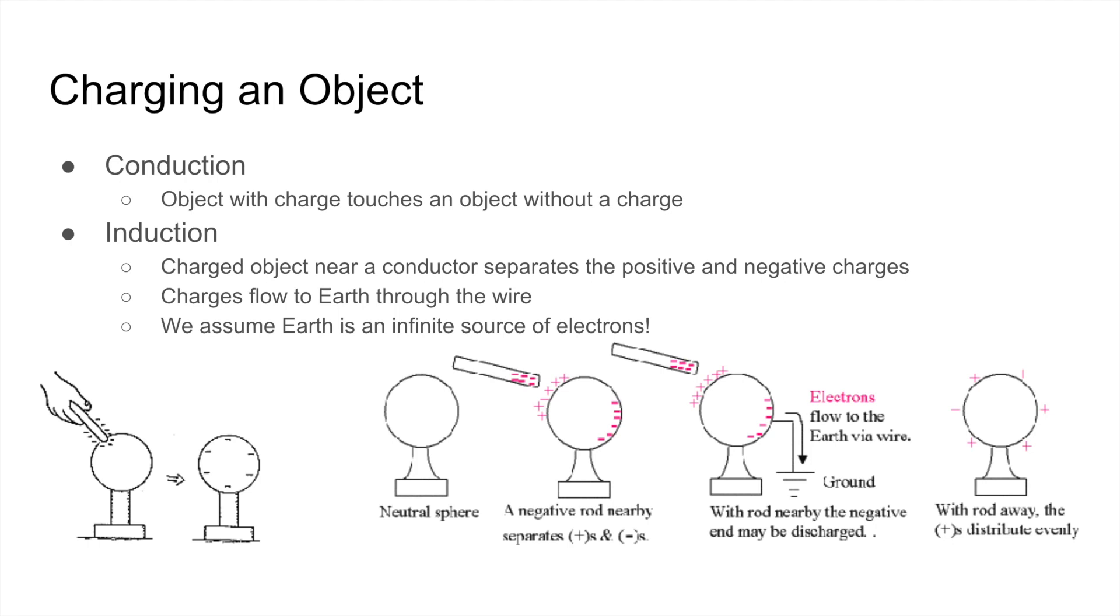And this is the same exact situation as if the rod was positively charged, except that the sphere at the end would be left with a negative charge. Now if we didn't disconnect the wire and we brought the rod away, the electrons will flow back into the wire to the sphere, and later the positive and negative charges would distribute evenly.